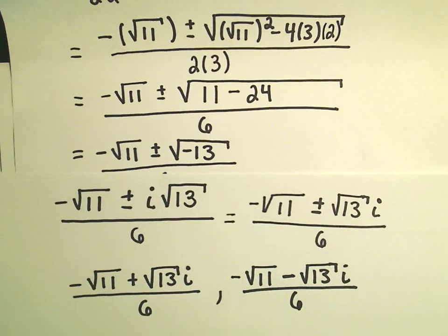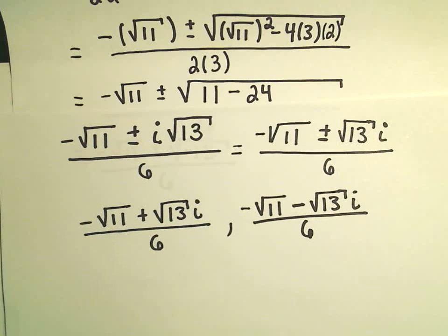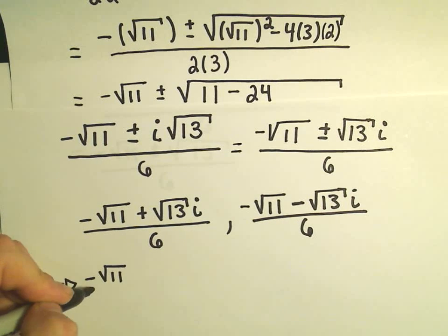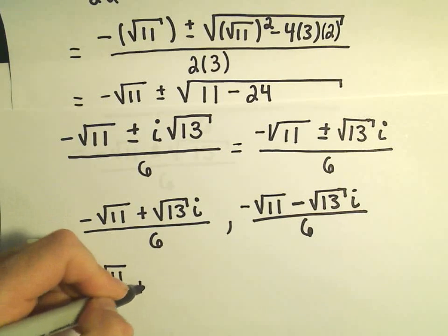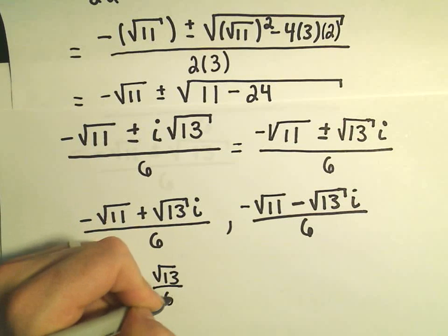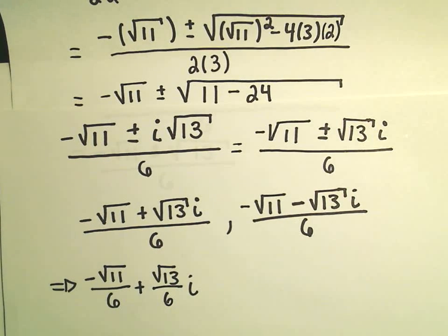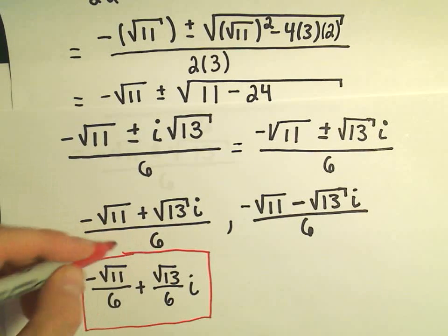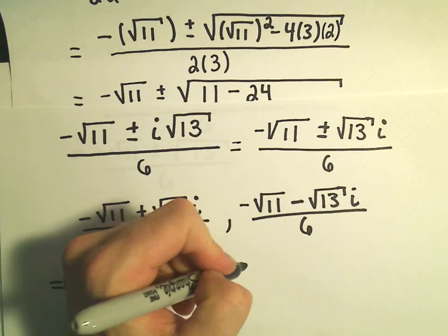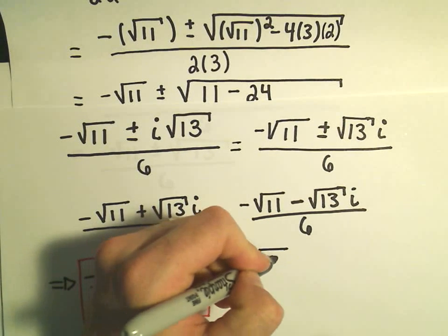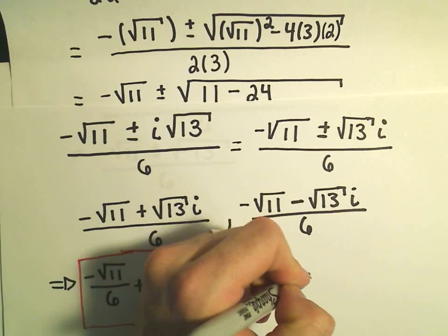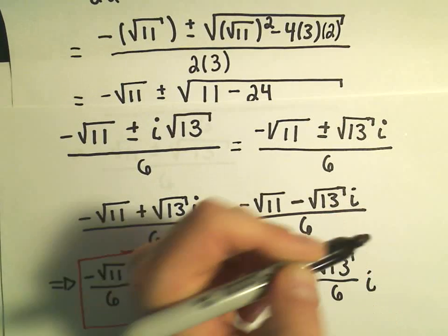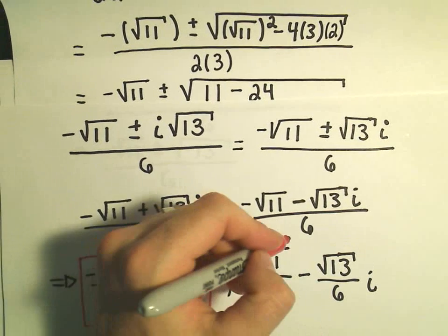There's not really a lot of simplification you can do here, but sometimes with complex numbers we will break them up. So we can make this negative square root of 11 over 6, plus square root of 13 over 6 times i — that's one complex solution. And the other one: negative square root of 11 over 6, minus square root of 13 over 6 times i. Those are our two complex solutions to this quadratic equation.